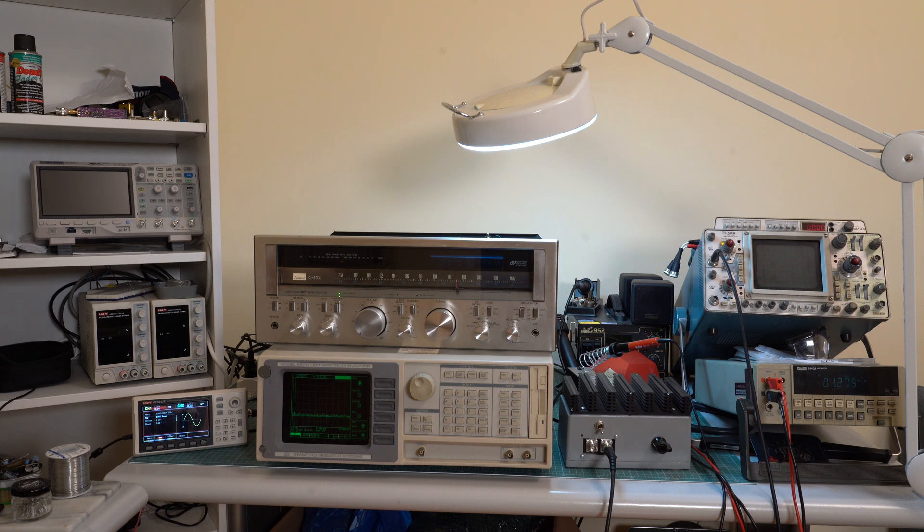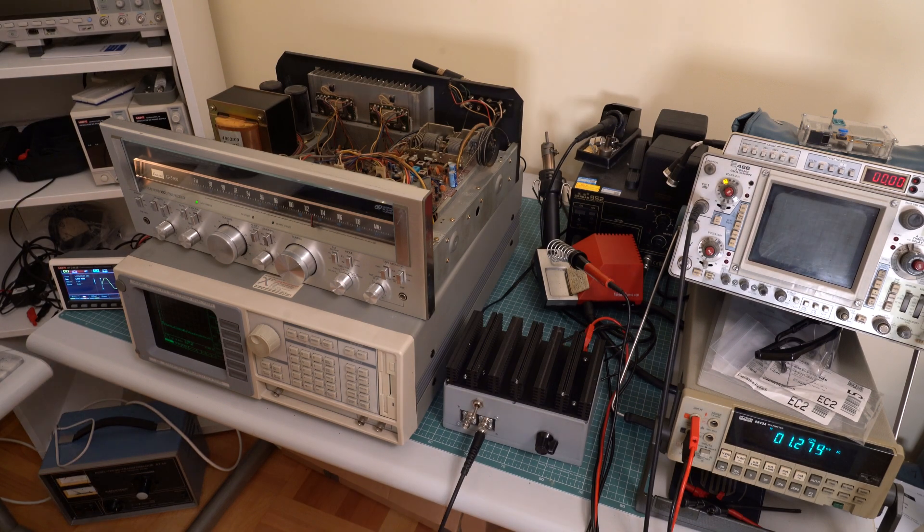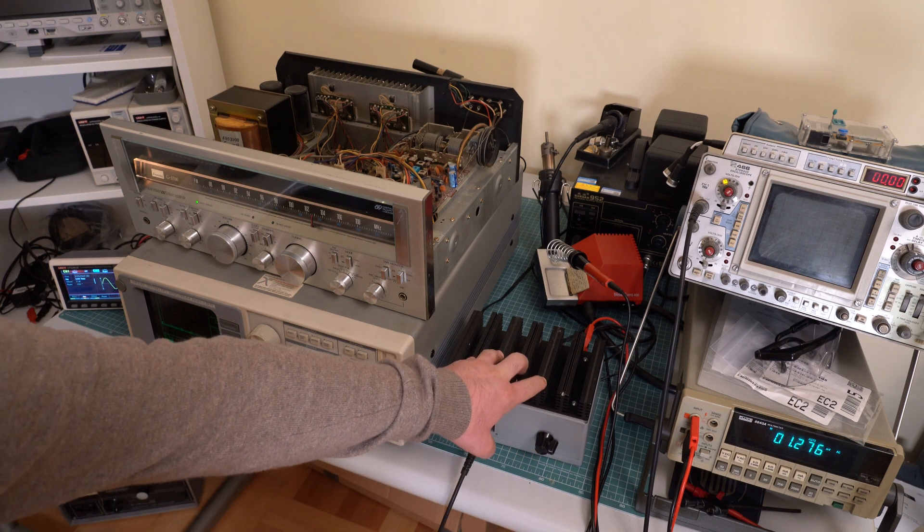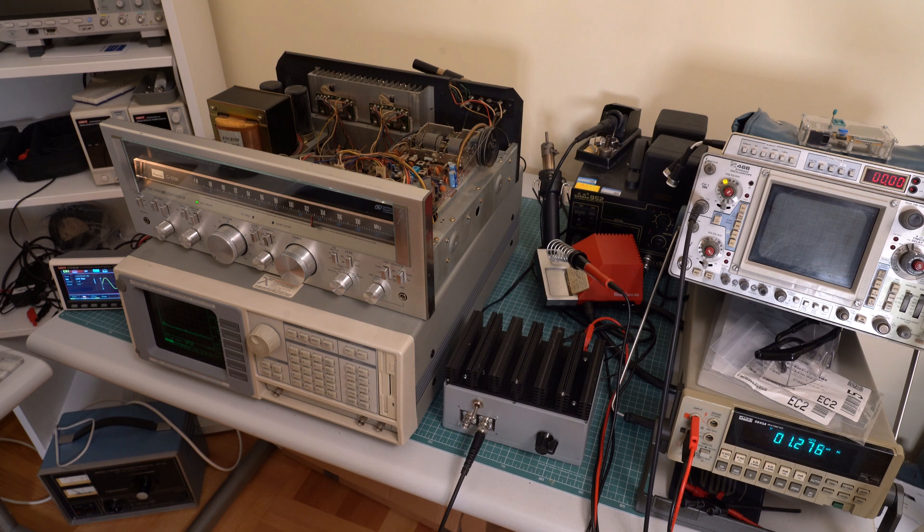Our device under test today is this Sansui G5700, and in order to complete the setup we need a dummy load, a signal generator, an oscilloscope, and a spectrum analyzer. For all of today's experiments, the speakers will be replaced by this dummy load, which is just a bunch of power resistors. This will give us a nice controlled impedance at the output, and also this will avoid any noise during testing, so it's a really nice thing to have.